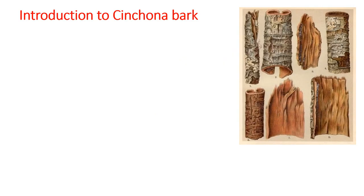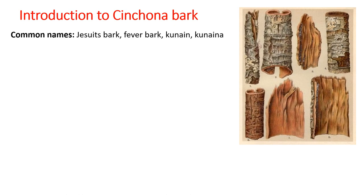Cinchona Bark is commonly known as Jesuit's Bark or Fever Bark because it treats fever, and in Sanskrit or Hindi it is known as Kunaina Bark. It is called Jesuit's Bark because the external appearance is slightly silverish due to the presence of mosses, so it appears to be like a Jesuit's bark.